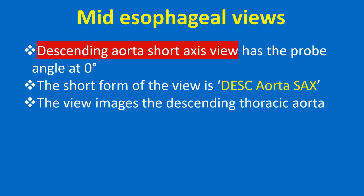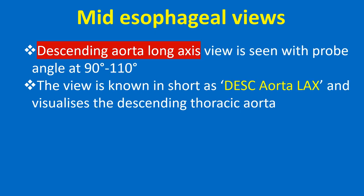The descending aorta short axis view has the probe angle at 0 degrees, known in short as Desc Aorta SAX, and images the descending thoracic aorta. The descending aorta long axis view is seen with probe angle 90-110 degrees, known in short as Desc Aorta LAX, and also visualizes the descending thoracic aorta.